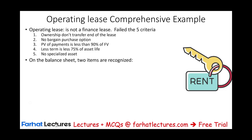Otherwise, we would have a finance lease. In the next session, we'll look at a comprehensive example for a finance lease. On the balance sheet, whether we have an operating lease or a finance lease, we record an asset called the right-of-use asset and a liability called the lease liability. This is the same for both an operating lease and a finance lease.